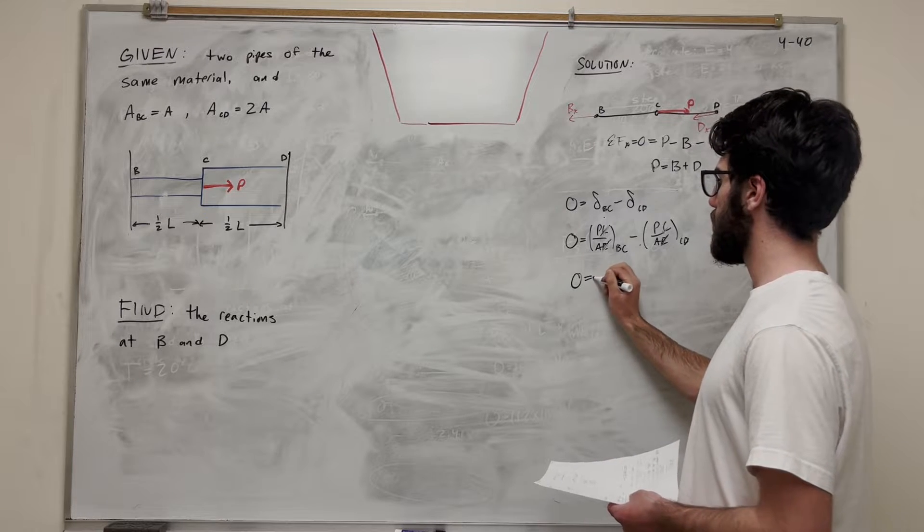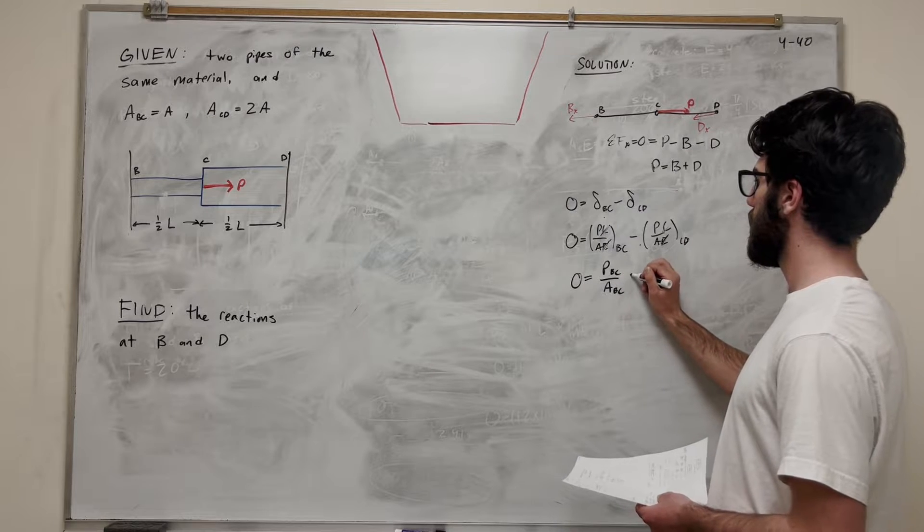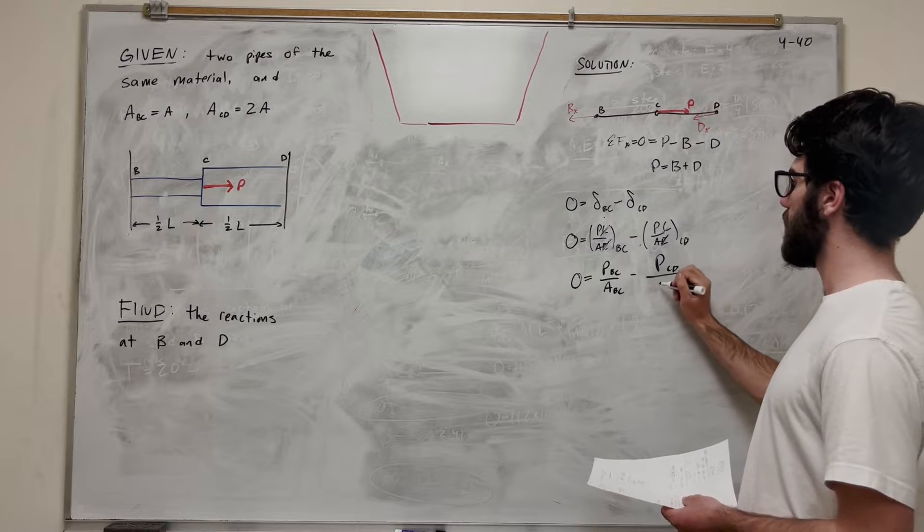So we're going to get zero is equal to P BC over area BC minus P CD over area CD. So now we have this thing here. This is going to be pretty useful. We can plug that in.